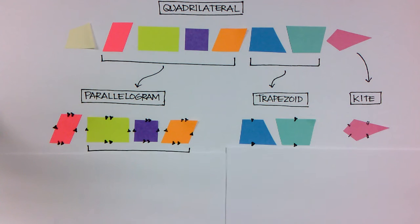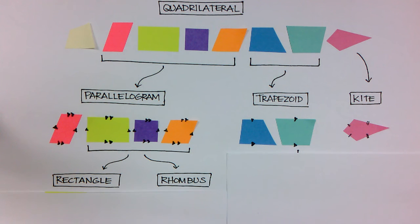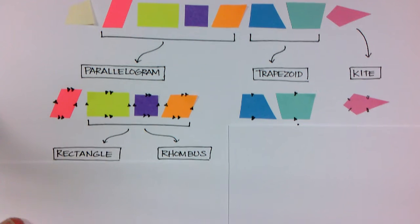For example, those three, the green, the purple, and the orange, can be separated into either being called a rectangle or a rhombus. So let me move this up.